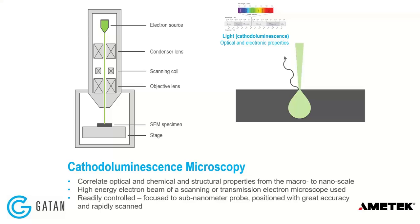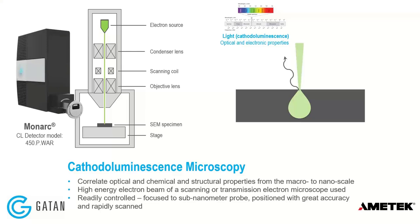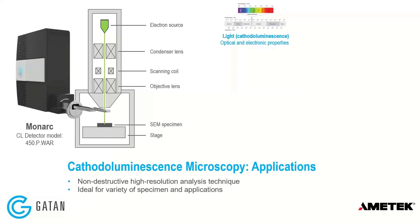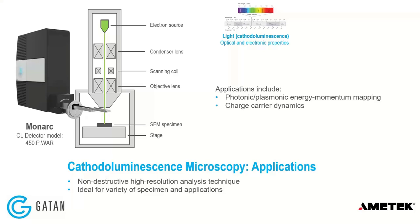We're basically piggybacking off of the electron microscope's ability to focus to a very small spatial resolution. We bolt on a cathodoluminescence detector and insert an arm into the beam's path, where the beam passes through an aperture in the mirror, and the light is coupled back into the system for analysis. CL microscopy is non-destructive and has very high spatial resolution. It's ideal for photonic and plasmonic energy momentum mapping, charge carrier dynamics, stress and strain mapping, crystal defect mapping, and device characterization and failure analysis.